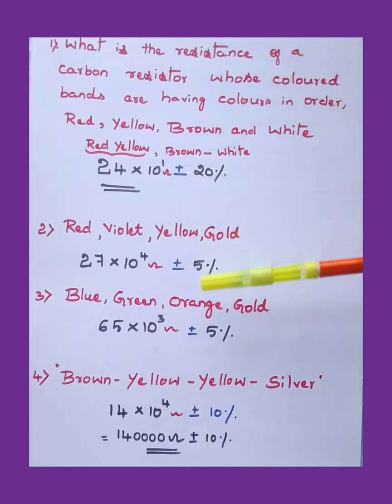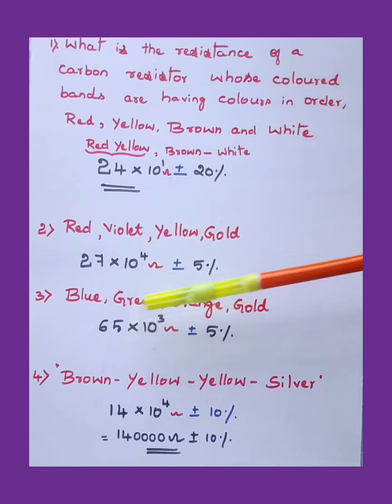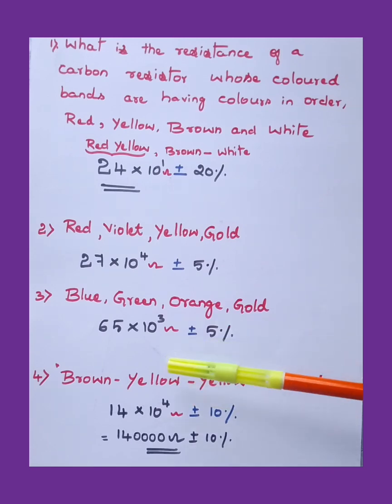Blue, green, orange, gold. For blue, what is the value? It is 6. For green, 5. For orange, 10 to the power of 3. So 65 × 10^3 ohms ± 5 percentage for gold.